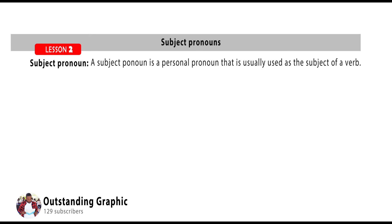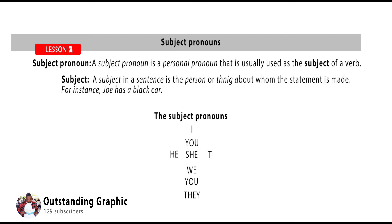Subject pronouns. A subject pronoun is a personal pronoun that is usually used as the subject of a verb. The subject in a sentence is the person or thing about whom the statement is made. For instance, in 'Joe has a black car,' the subject is Joe — the statement is made about him. The subject pronouns are: I, you, he (for men), she (for women), it (for an animal or thing), we, you, and they.